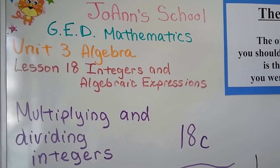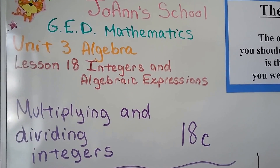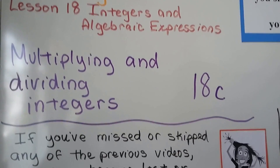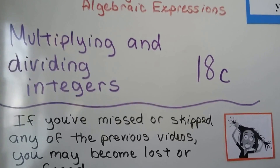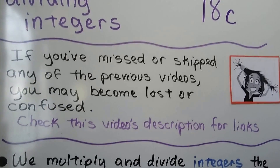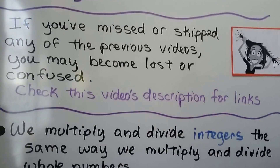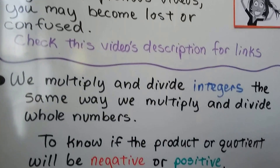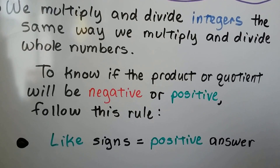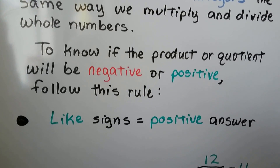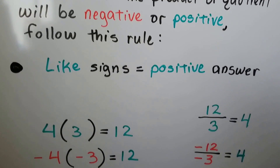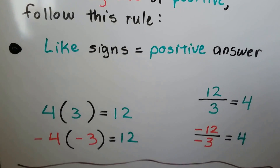This is all about multiplying and dividing integers. Lesson 18c, 18b, and 18a are linked in the description with other helpful videos. We multiply and divide integers the same way we multiply and divide whole numbers. To know if the product or quotient will be negative or positive, we follow this rule.